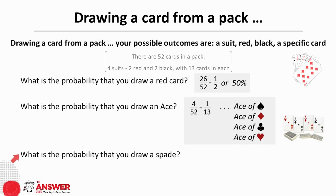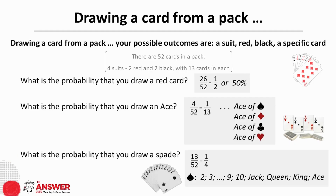What is the probability that you draw a spade? Spades are one of the four suits containing 13 cards, ace through to king. The ace can play as a low or a high card, by the way. So 13 out of the 52 cards are spades, which means the probability of drawing a spade is a quarter, or we could also say 25%.